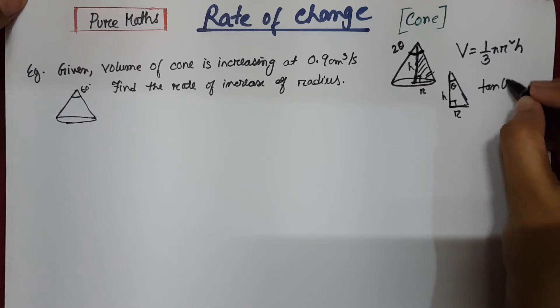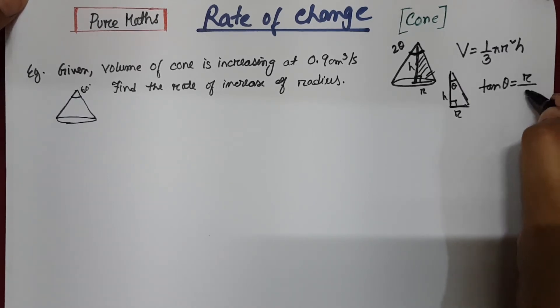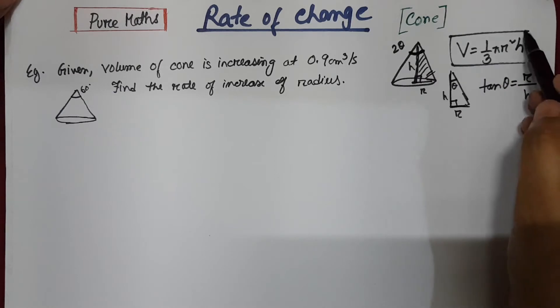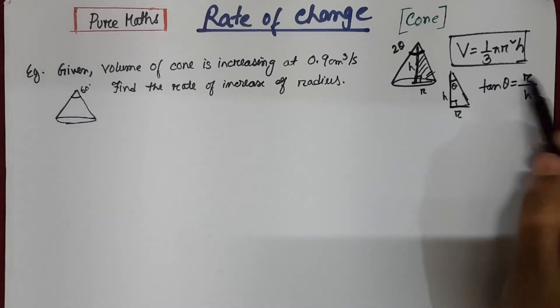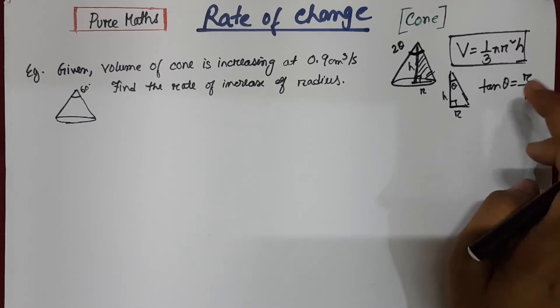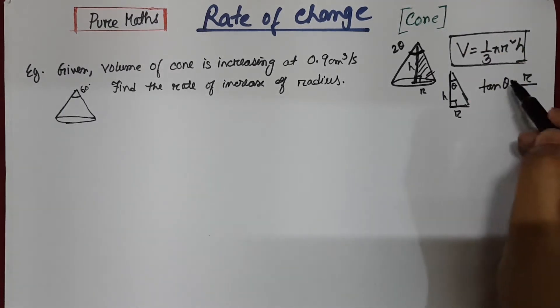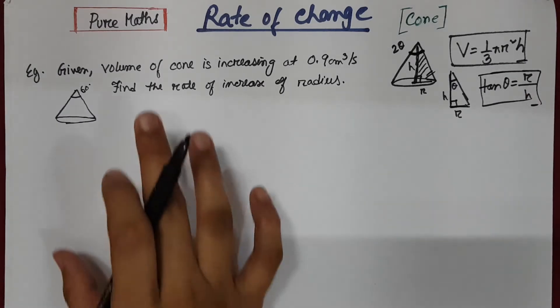So tan theta equals radius by height. This is the main formula and you do not need to memorize this one since you can find tan theta equals opposite by adjacent for any right angle triangle.